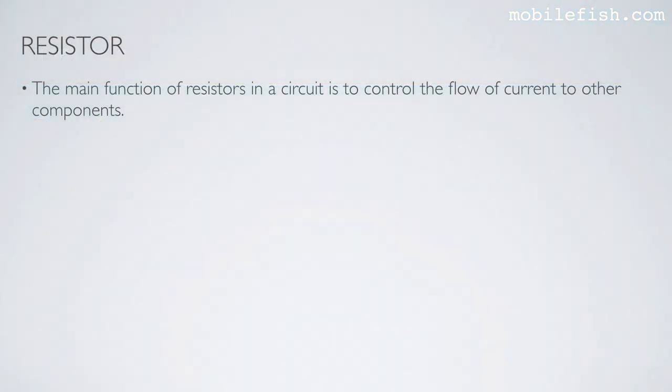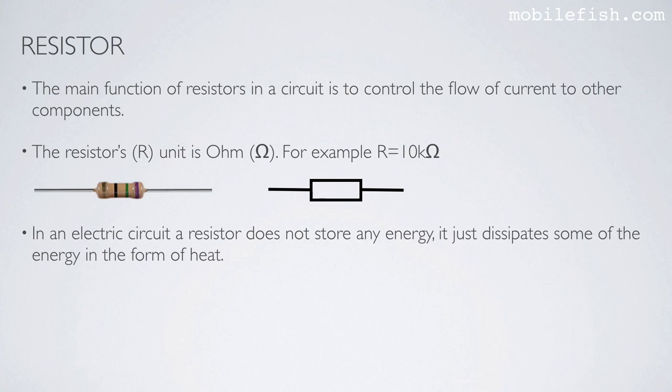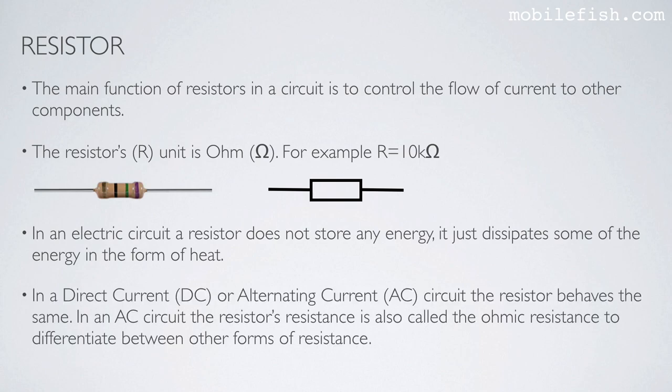The main function of resistors in a circuit is to control the flow of current to other components. The resistor's unit is ohm, for example 10 kilo-ohms. In an electric circuit a resistor does not store any energy; it just dissipates some of the energy in the form of heat. In both direct current and alternating current circuits the resistor behaves the same. In an AC circuit the resistor's resistance is also called the ohmic resistance, to differentiate it from other forms of resistance.